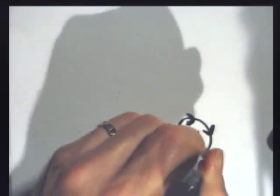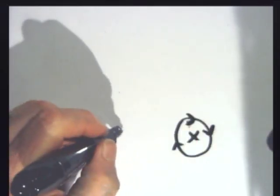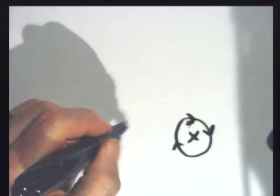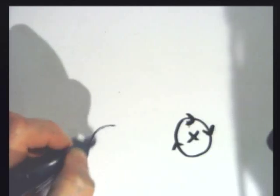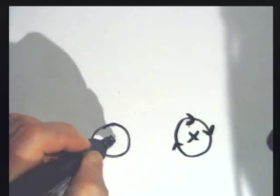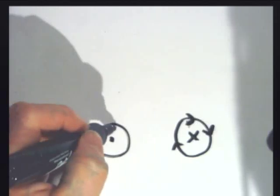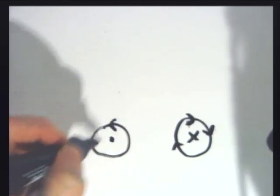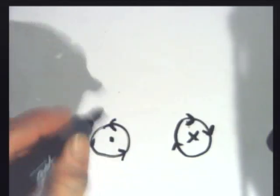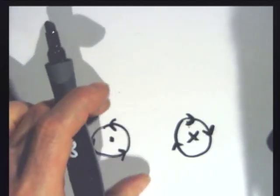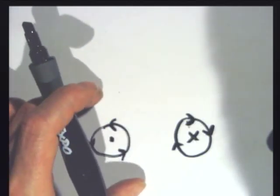Instead of just having the charge going into the field, let's say now that it wraps in and comes back out. The X means it's going in; the dot means it's coming back out. Now it's coming the other way, so the arrows are going the other way — the magnetic field is going in this direction. The further out I get, I've got more circles; the field gets weaker and weaker.